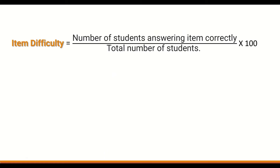The way to calculate item difficulty is to use the following equation: count the number of students answering the item correctly, divide that by the total number of students, then multiply the product by 100 to generate an item difficulty percentage.